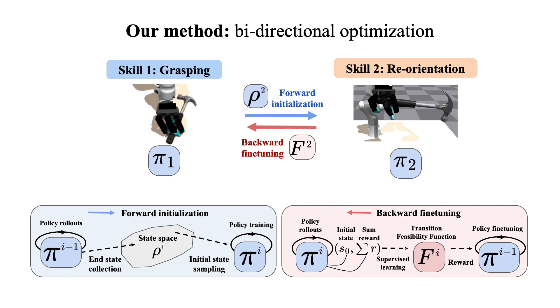This bi-directional optimization framework enables the dexterous policy to reach an intermediate state distribution that facilitates smooth skill chaining.